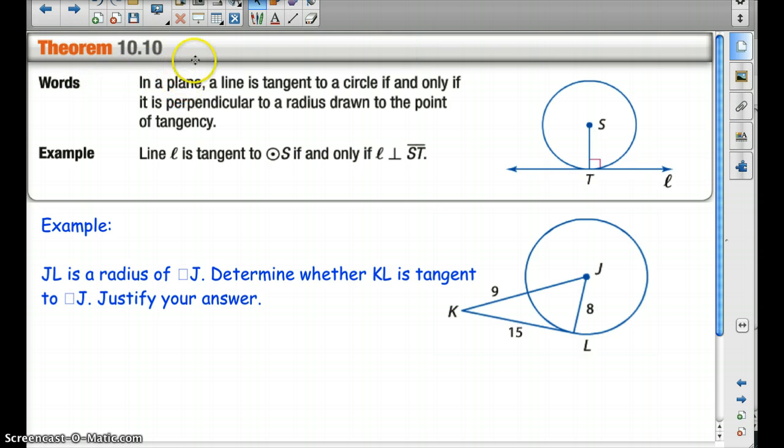In our packets, we're going to write down theorem 10.10. In a plane, a line is tangent to a circle if and only if it is perpendicular to a radius drawn to the point of tangency. So it has to be perpendicular. That's the key word. So JL is a radius of circle J. Determine whether KL is tangent to circle J. Justify your answer.